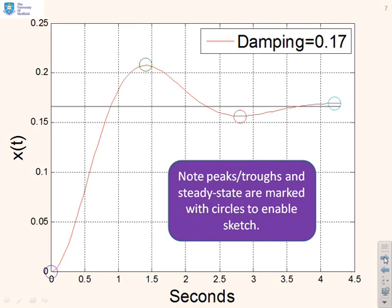If we put all that data together, then we get this sketch. Now if you ignore the line for now, what we've done is we've marked the start point, 0 initial conditions. We've marked 1.4 as being the first peak, and we've said at the first peak we had a 25% overshoot, so we've marked that point there.